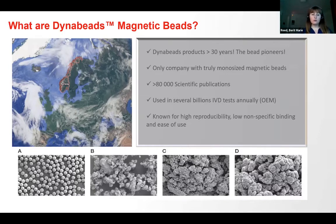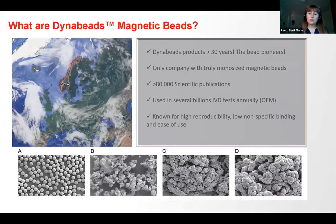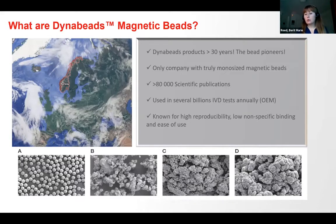If you look at picture A at the bottom, that is the dynabeads. As mentioned, they are all the same size — they are monosized — and they have a very smooth surface. That is why they have very high reproducibility and very low nonspecific binding. Pictures B, C, and D show alternative vendors in the market. Some of them look more like cornflakes or sponges, and it's not easy to get reproducibility with those kinds of irregular structures. You also get more nonspecific binding with these uneven surfaces that proteins can bind to. That is why dynabeads are often preferred when high-quality results are required.